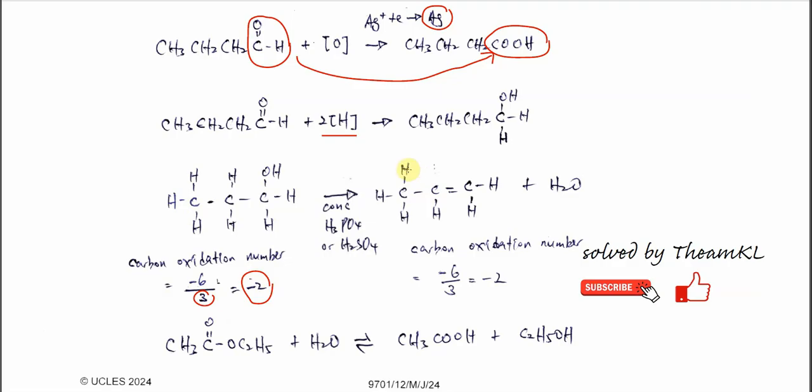After dehydration, let's check the hydrogens: there are 6 hydrogens, which is positive 6, so we need negative 6 to balance it. Negative 6 over 3 carbons gives us negative 2. So negative 2 to negative 2 means it doesn't undergo a redox reaction. Dehydration is not a redox reaction.